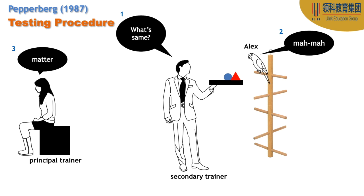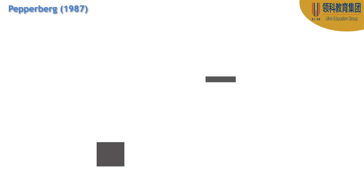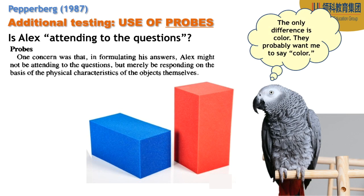One additional confusing point about the testing procedure is that Alex was also asked questions where there was more than one correct answer. Why? We want to make sure he's actually attending to the questions — actually listening to what's being asked of him, not just to what he's seeing. For example, if he were shown a blue block of wood and a red block of wood, there's only one difference, and he might just say 'color' to get his reward.